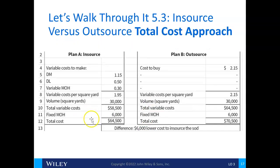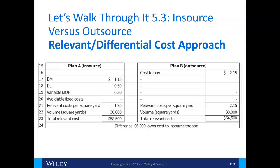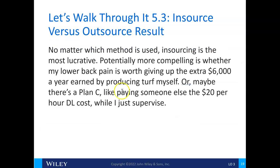The $6,000 fixed overhead is the same in both options, so it's irrelevant. The differential cost approach only looks at things that are different and relevant, and you still get the same $6,000 difference. No matter which method is used, insourcing is more lucrative. A qualitative consideration: is the lower back pain of producing turf yourself worth giving up that extra $6,000, or could you hire someone else to do the direct labor while you supervise?